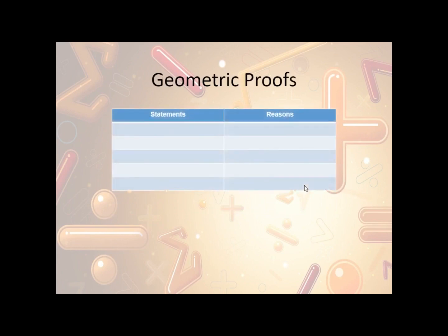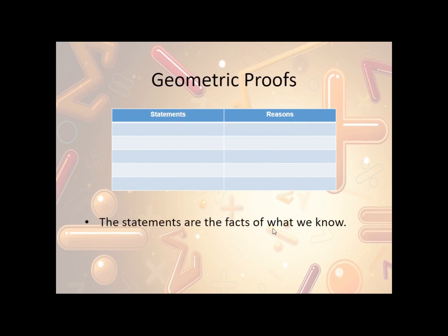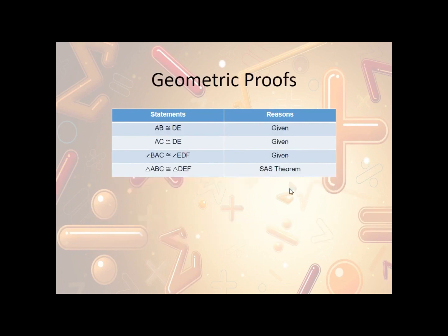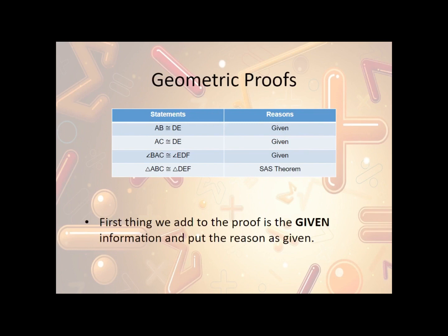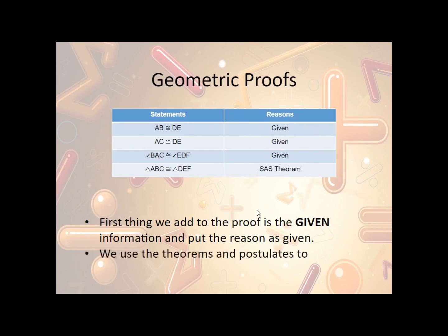So what do geometric proofs look like? We have a column that represents our statements — what do we know — and the right side is the reasons, which are the arguments for how we know that to be true. For example: AB is congruent to DE, reason given; AC is congruent to DE, given; angle BAC is congruent to angle EDF, given. Then the triangles are congruent by the SAS theorem — that's what we had to come up with on our own using theorems and postulates.